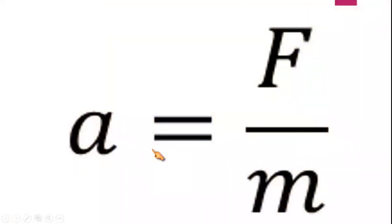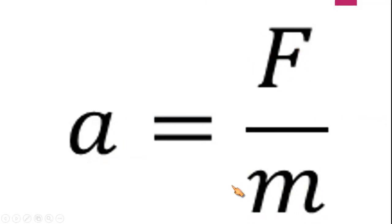To calculate the acceleration, acceleration equals force divided by mass. If force is missing in a problem, you multiply the mass by the acceleration. If the mass is missing, you divide the force by the acceleration.